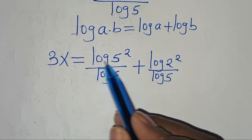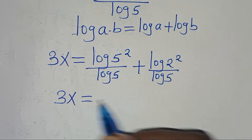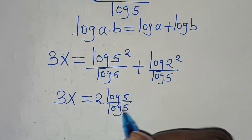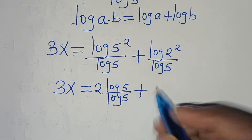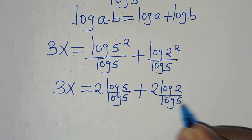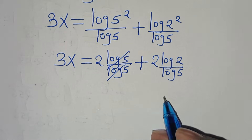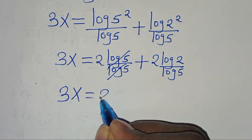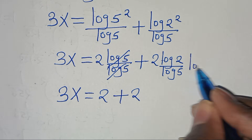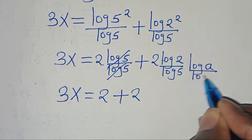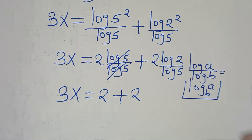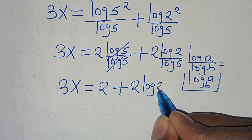Applying the power property, log(5²) becomes 2·log(5). Dividing by log(5), that term simplifies to 2. For the second term, log(2²)/log(5) = 2·log(2)/log(5). Since log(a)/log(b) = log_b(a), this becomes 2·log₅(2), giving us 3x = 2 + 2·log₅(2).